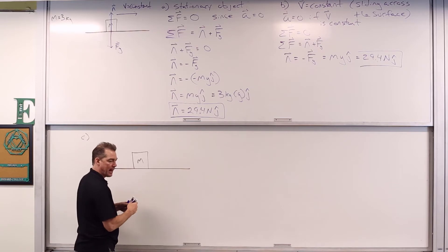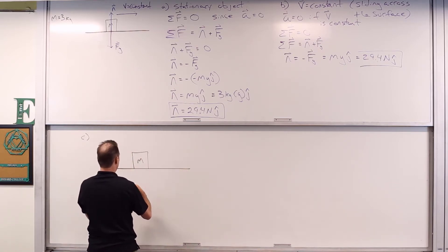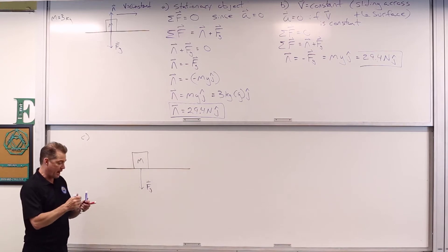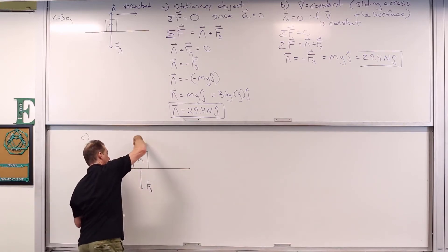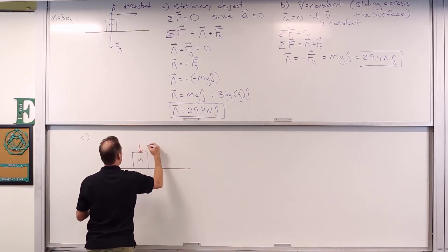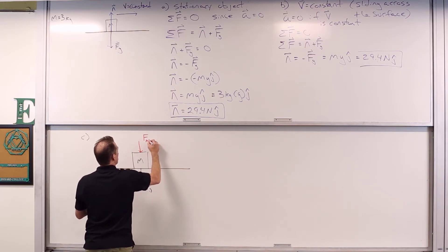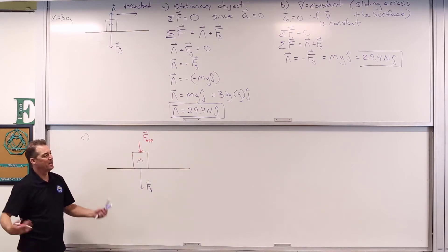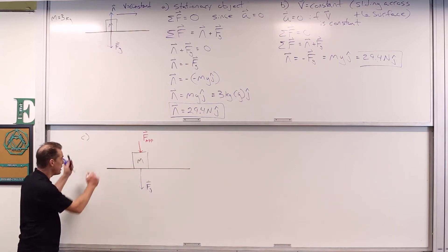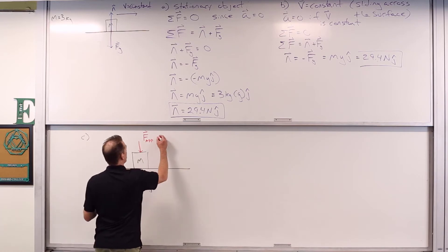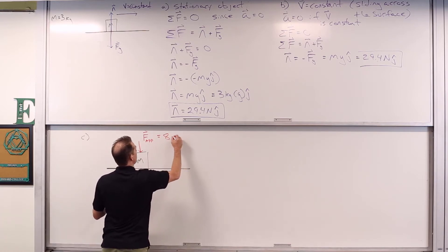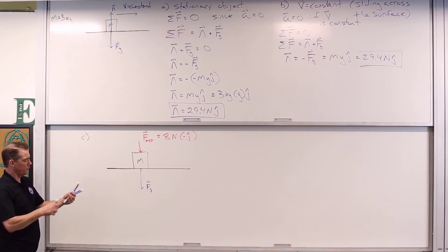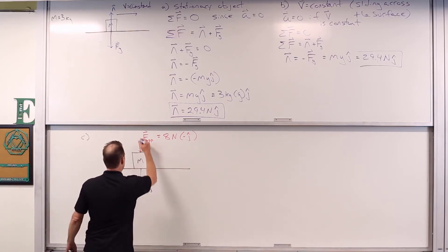There are some forces acting on it. We've got the force due to gravity pulling it down, F sub G hat. We're also pushing it down — I'll call this F sub APP for applied force. Applied force is just someone or something else pushing or pulling on an object. We're pushing downward on it, and that applied force is equal to 8 Newtons in the negative J hat direction. And we've still got a normal force acting on it from contact with the surface.